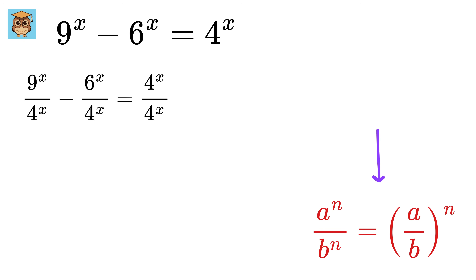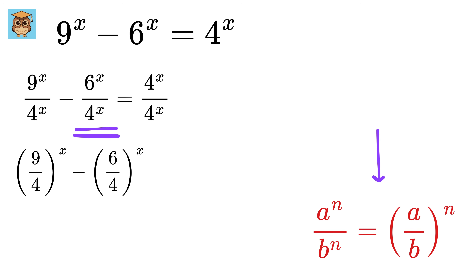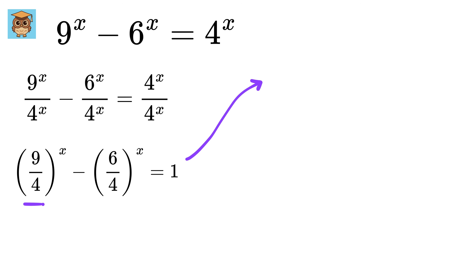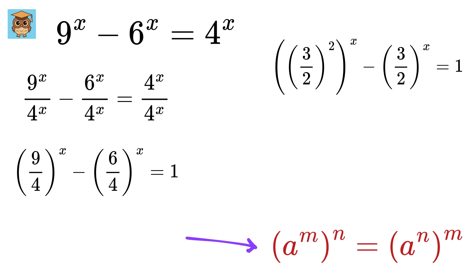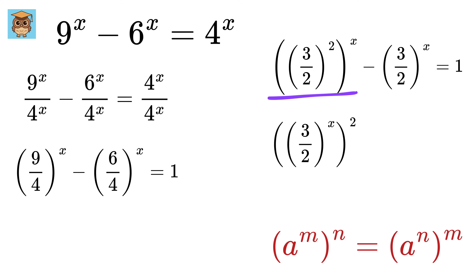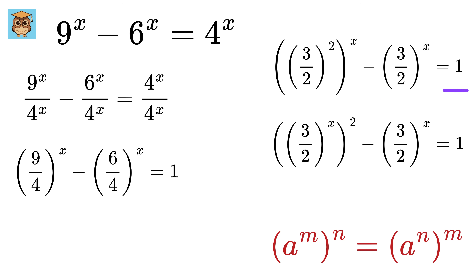Next, we can use this power rule to get 9/4 raised to x, then 6/4 to the x, and this as 1. Then we can write 9/4 as (3/2) whole squared, and 6/4 as 3 over 2. Using this power rule, this becomes (3/2) raised to x, whole squared, minus (3/2) to the x, equals 1.